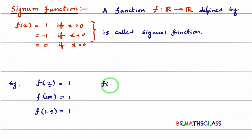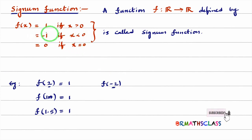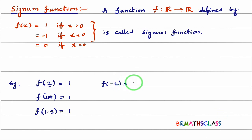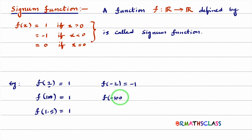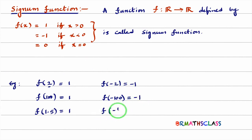Similarly, f of minus 2. Minus 2 is less than 0, so among the three functions, we need to choose the middle function when x is less than 0. The middle function is minus 1. So f of minus 2 is minus 1. When x is negative, f(x) is minus 1. So f of minus 100 is also minus 1. And f of minus 1/2 is also minus 1, since minus 1/2 is less than 0.